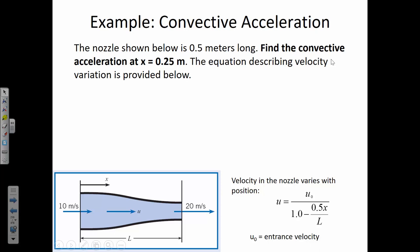Here's convective acceleration illustrated with the same nozzle. The text provides an equation relating velocity as a function of position within that nozzle. We can find the velocity u at any point in the flow field as a function of the initial velocity u-naught. The initial velocity entering this nozzle is 10 meters per second, but as x increases, so does the velocity. The formula tells us at any location x what the velocity is going to be.